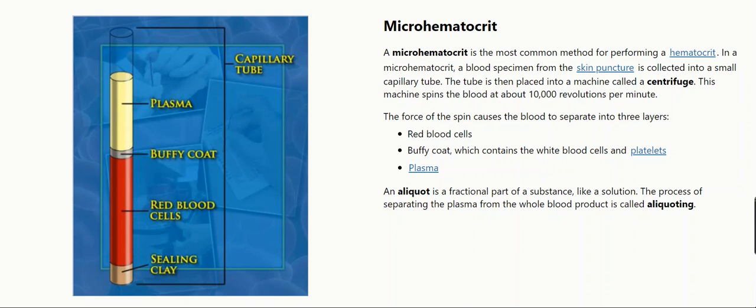This machine spins the blood at about 10,000 revolutions per minute. The force of the spin causes the blood to separate into three layers: red blood cells, buffy coat which contains the white blood cells and platelets, and plasma.